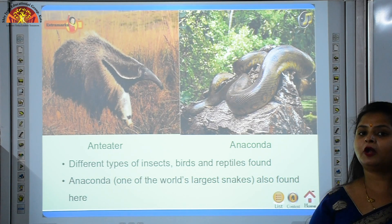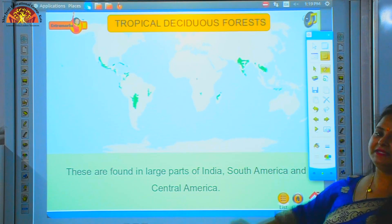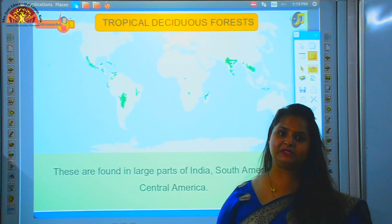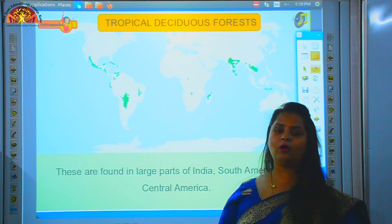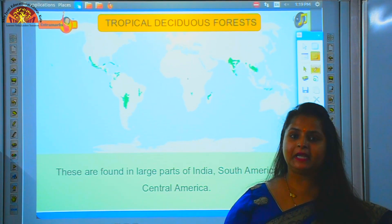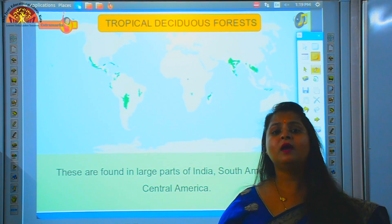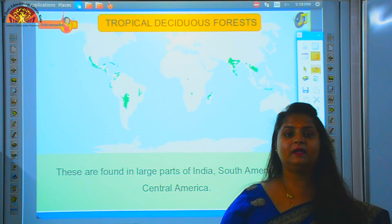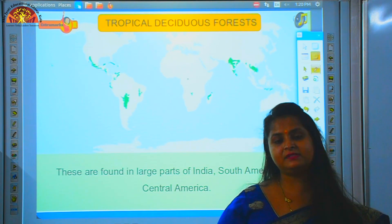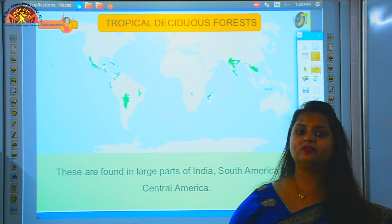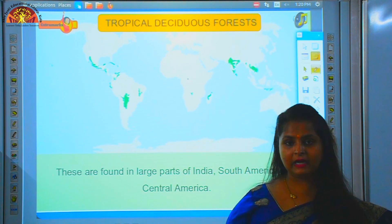Next we are going to cover tropical deciduous forest. In the tropical region, both tropical deciduous and tropical evergreen forests are there. In some areas there is heavy rainfall and in some areas there is moderate or seasonal rainfall. Where there is heavy rainfall throughout the year, evergreen forests are there, and where there is seasonal rainfall like monsoons, deciduous forests are there.